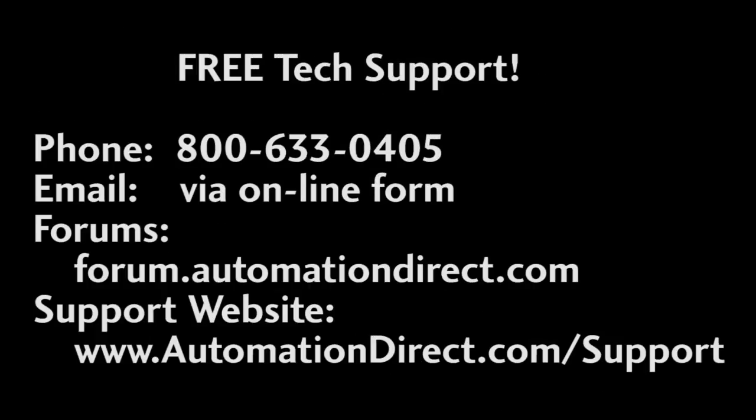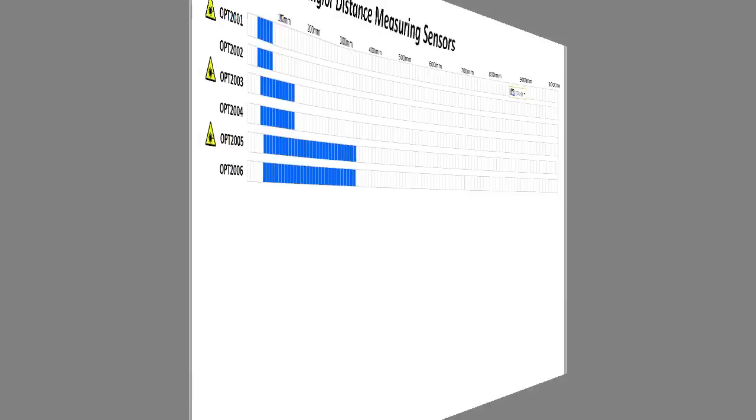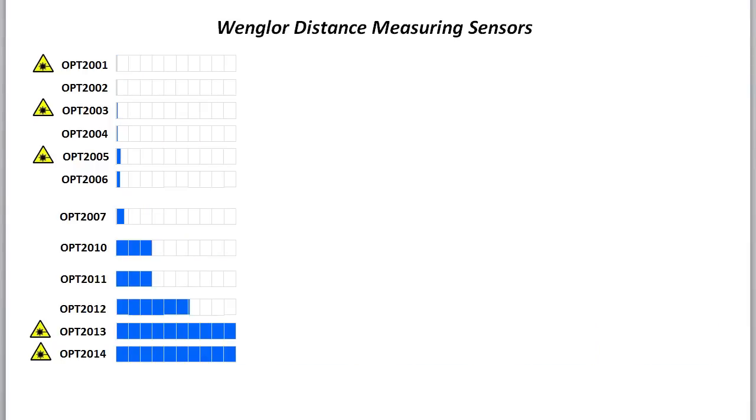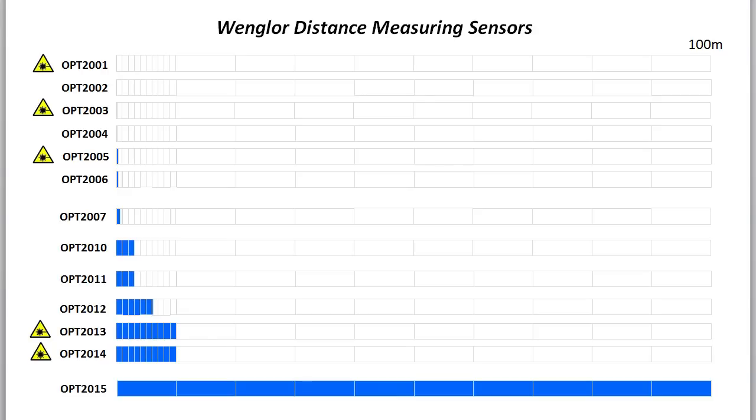Got a question? During regular business hours, you can call, email, and even do online chat with AutomationDirect's award-winning tech support staff here in the U.S. within minutes. AutomationDirect.com offers Wenglor distance measuring sensors from 80 micrometers all the way out to 100 meters to cover all of your distance measuring needs.